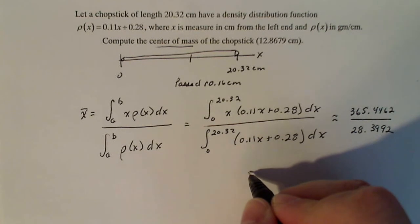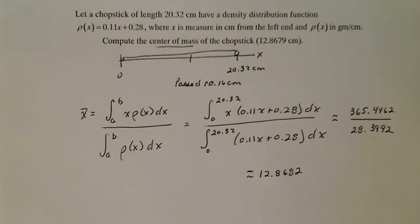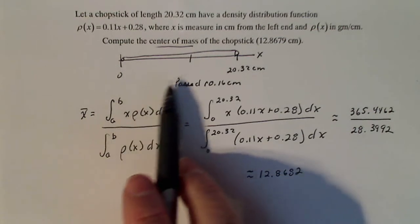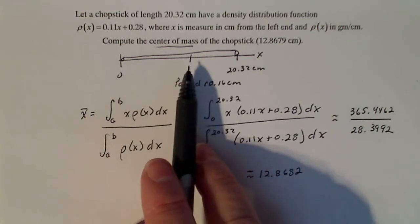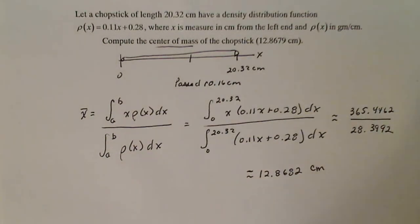If I simplify that, I get a center of mass that is about 12.8682. Now what unit of measure should I put on there? Well, a center of mass is just the distance from one end of where the balance is or where the fulcrum is. So that's just a single linear function right now.